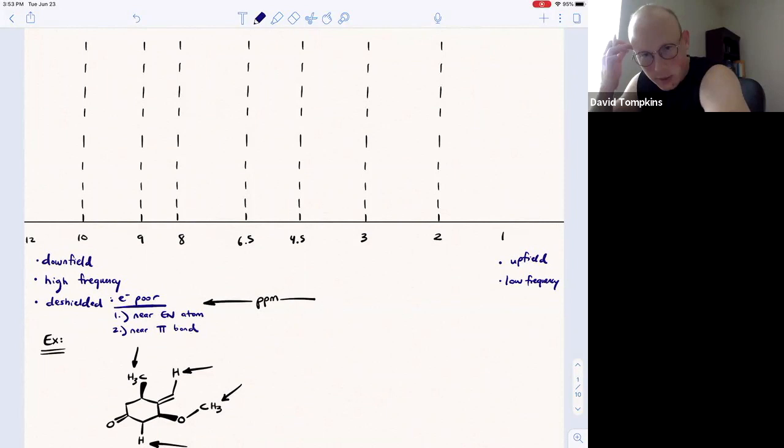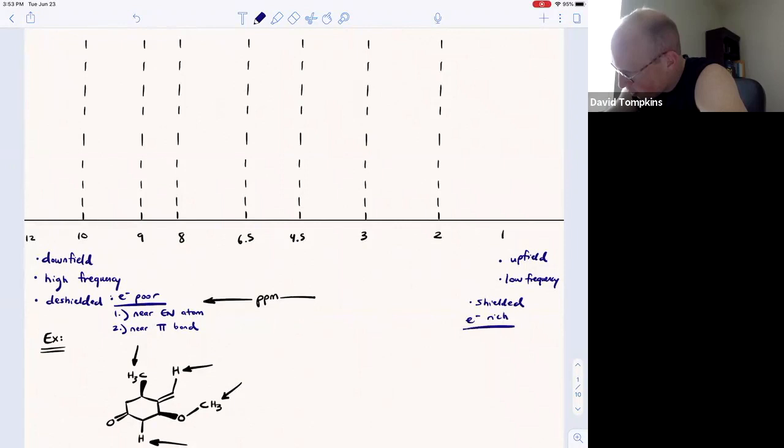Electron rich protons are shielded by their electron density, and they show up at lower frequencies. These are generally going to be electron rich because they are either far from electronegative atoms and/or far from pi bonds.